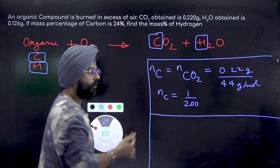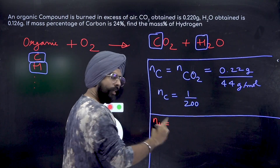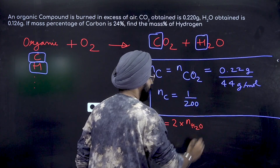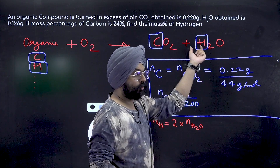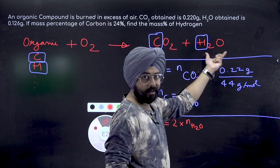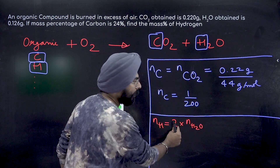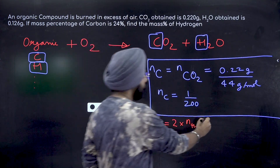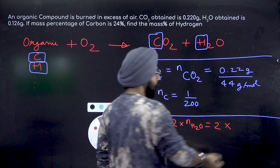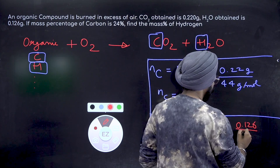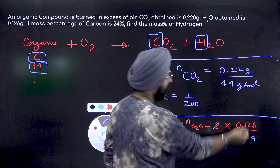Similarly for hydrogen: the number of moles of hydrogen is equal to 2 times the number of moles of water, because 2 moles of hydrogen give 1 mole of water — there are 2 hydrogens in every water molecule. The number of moles of water is given weight divided by molar weight: 0.126 divided by 18.